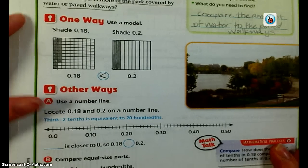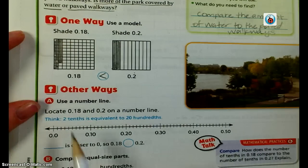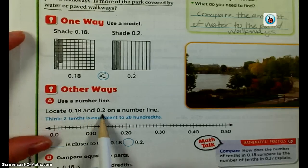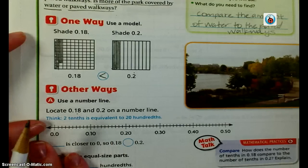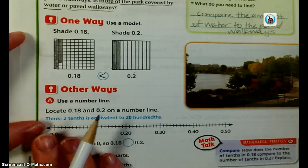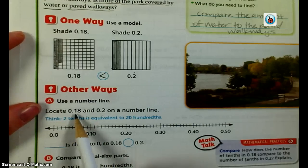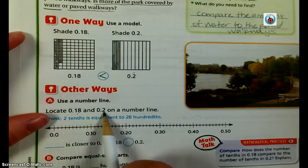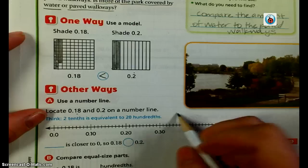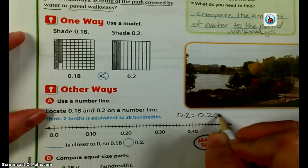That's not the only way we can do this — we can compare on a number line as well. If we locate eighteen hundredths and two tenths on a number line, we can figure out which one is closer to zero (smaller) and which one is closer to one (bigger). The only problem is mixing tenths and hundredths, so I'm going to convert two tenths into twenty hundredths.